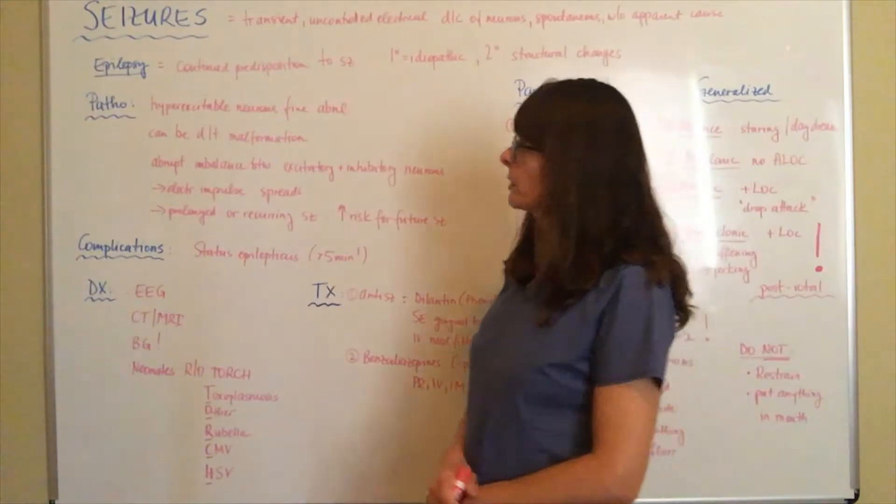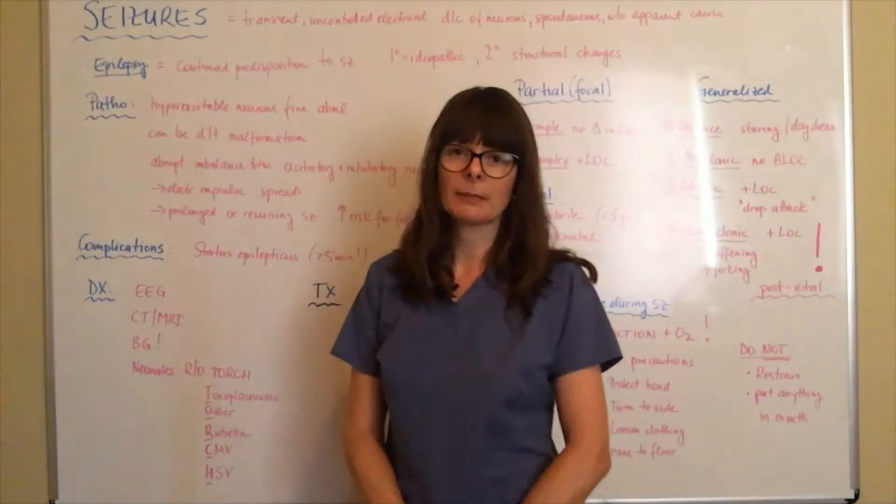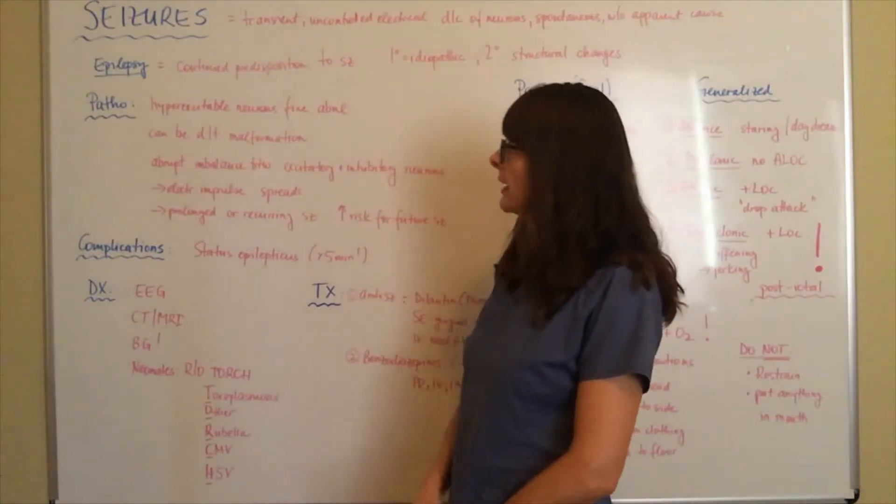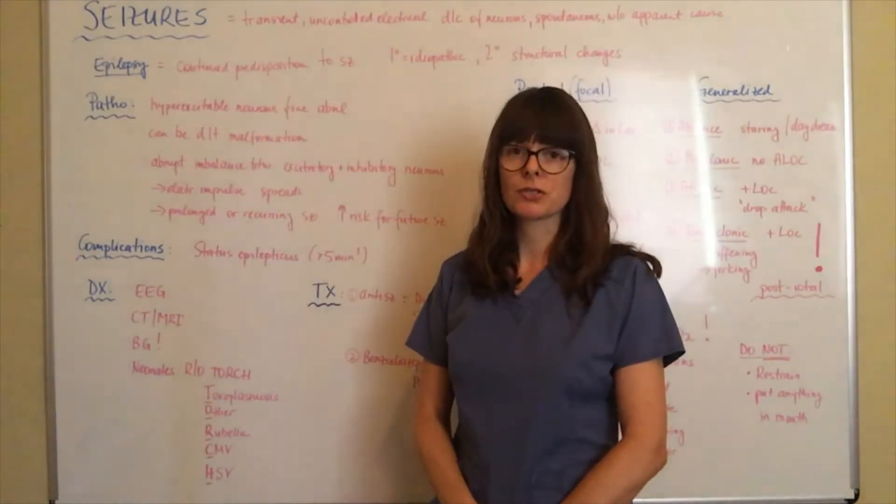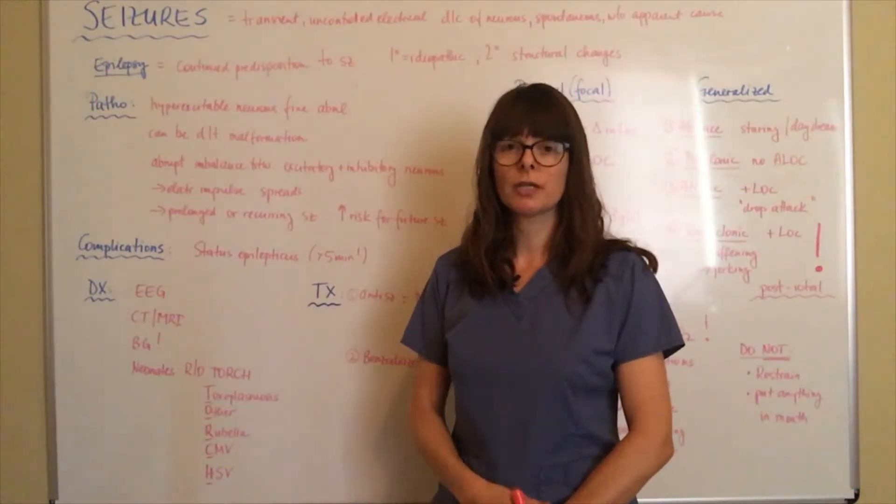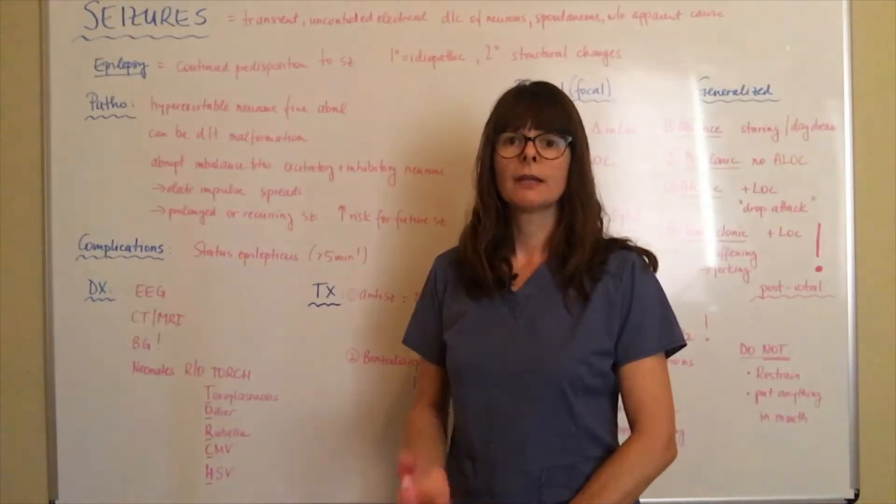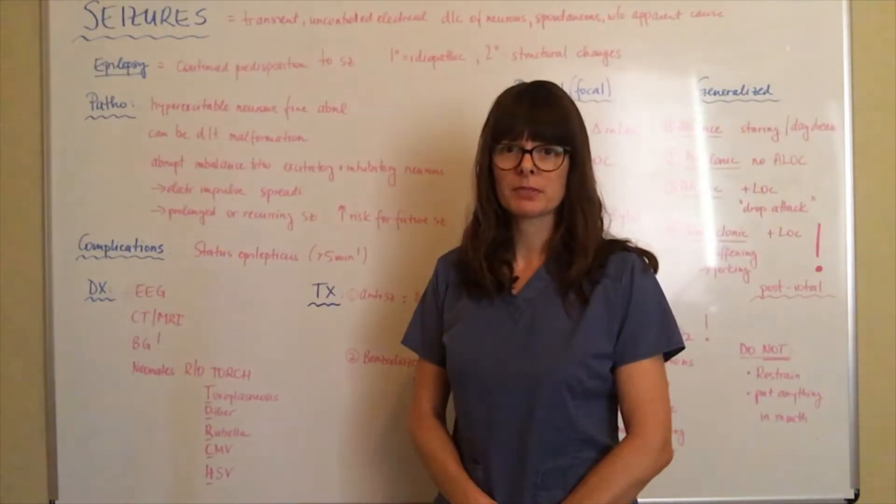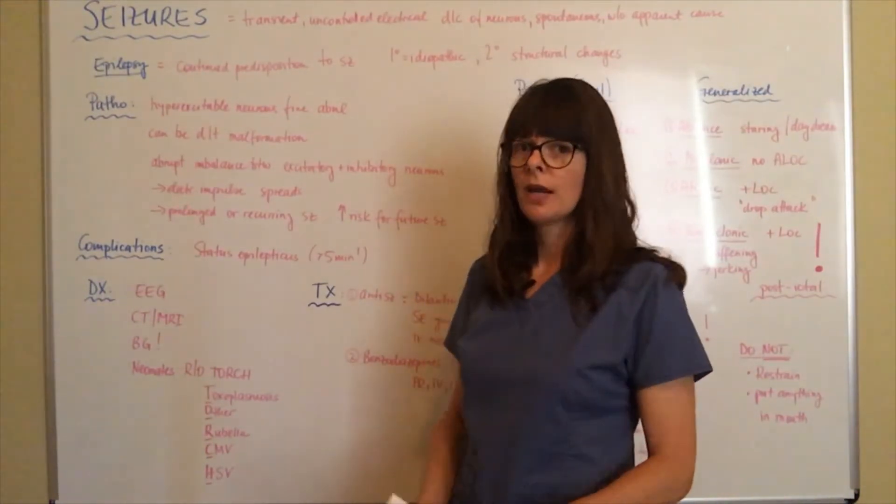When we talk about seizures, another term that often comes up is epilepsy. Epilepsy is defined as the continued predisposition to seizures. That is somebody that although they're on medication and being treated for whatever the underlying cause might be, they continue to have episodes of seizures. We'll look into the different types of seizures here in a little bit.